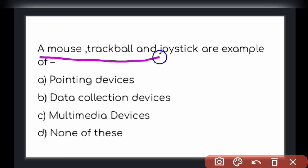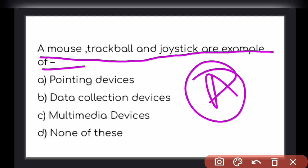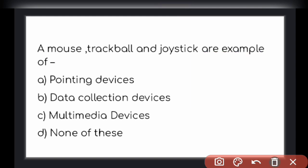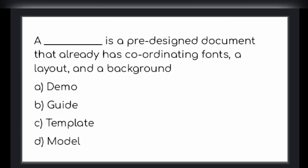A mouse, trackball, and joystick are examples of what? All these three are pointing devices. Mouse, trackball, and joystick are pointing devices. Option A is the right answer. Next question.